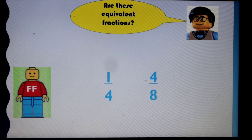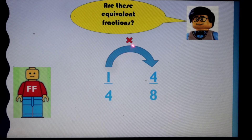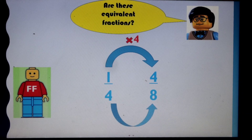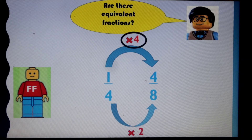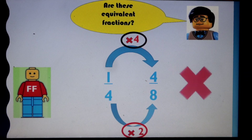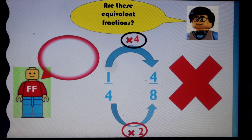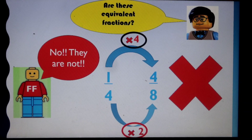Are these equivalent? We've got one quarter and four eighths. Remember, do these workings out. What times one equals four? The answer is four. Now go to the denominator: what times four equals eight? The answer is two. We need to remember to circle. Are these two numbers the same? No, they're not — so they are not equivalent fractions.